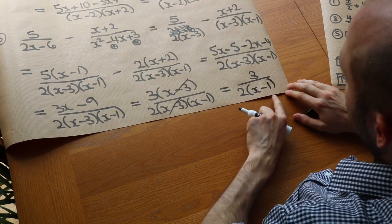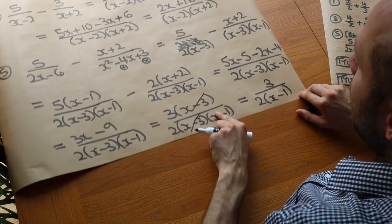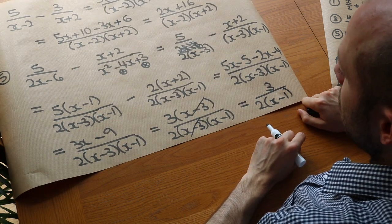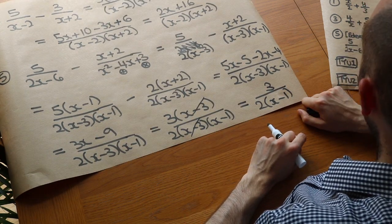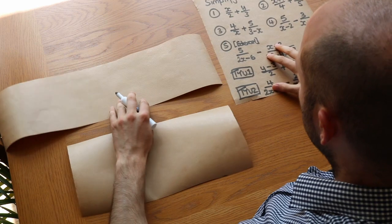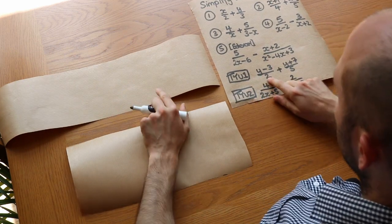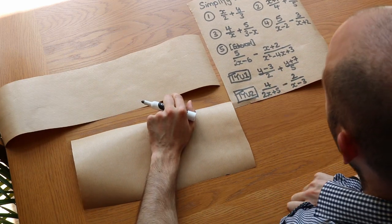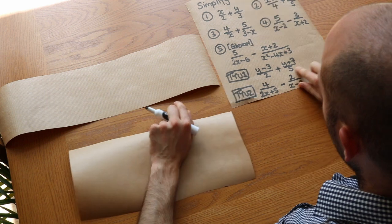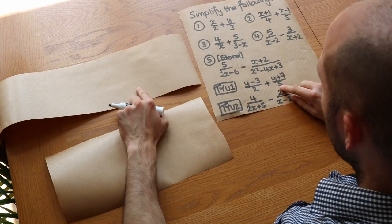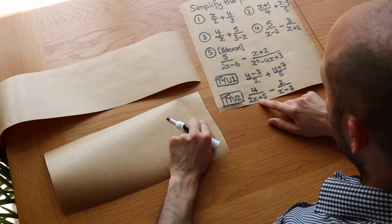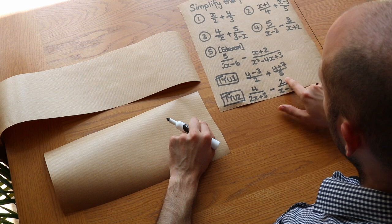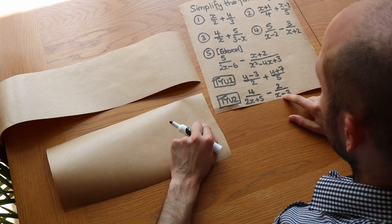It's also acceptable to write the denominator as 2x minus 2 at the bottom. That was quite a difficult one! Now to finish off, let's do two test-your-understanding questions: we've got (y−3)/2 plus (y+7)/5, and as a second one, 4 over (2x+5) minus 2 over (x−3). You may want to pause the video to have a go at these.